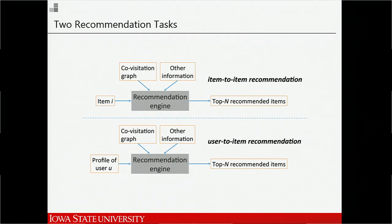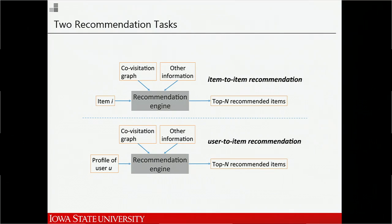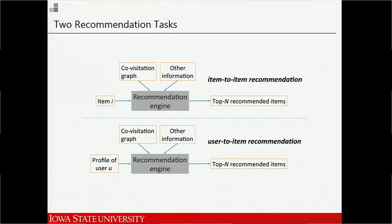Two types of recommendations can be made using this covisitation graph: item-to-item recommendation or user-to-item recommendation. For item-to-item recommendation, the input is an item, and the system generates a list of other items it believes are related. For user-to-item recommendation, it analyzes the user's profile to make a recommendation. In this presentation, I'm going to focus on item-to-item recommendation for demonstration, and you can refer to our paper for details about attacking user-to-item recommendation systems.